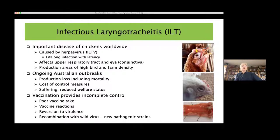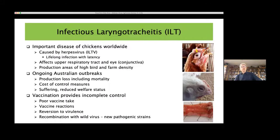A quick reminder about ILT. It's a pretty important disease of chickens worldwide, caused by a herpes virus, so it has all the latency and recrudescence issues associated with herpes viruses. It affects the upper respiratory tract, and conjunctivitis in the eye is also a target organ. It's endemic in areas with very high bird and farm densities. Australia has had ongoing outbreaks particularly in the last 15 years in both broilers and layers, but in the broiler industry we get significant outbreaks because vaccination is not routine.